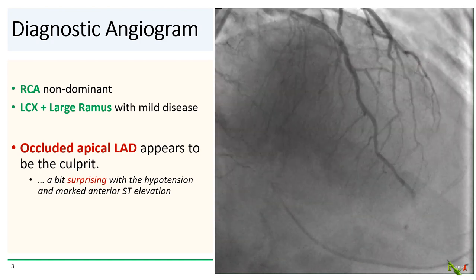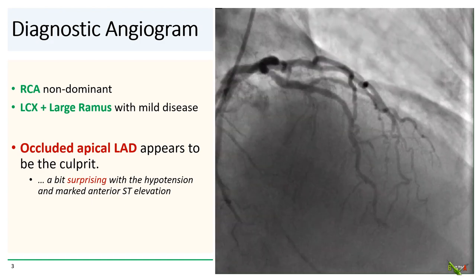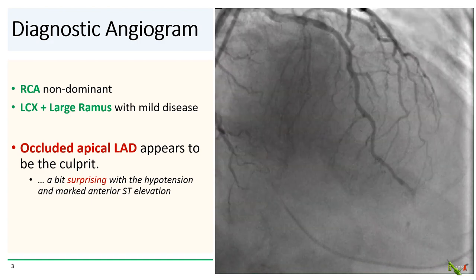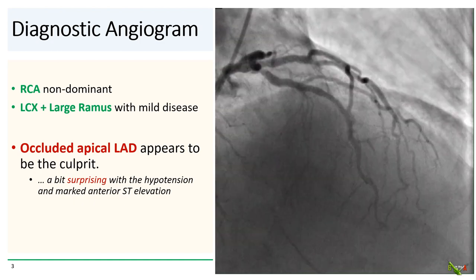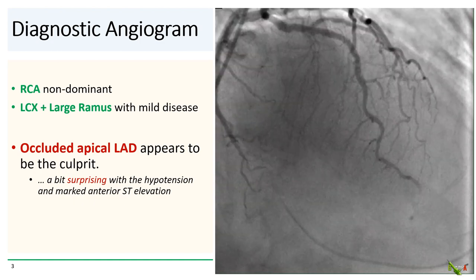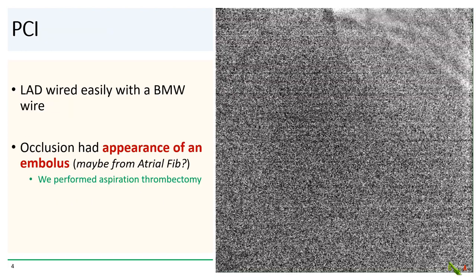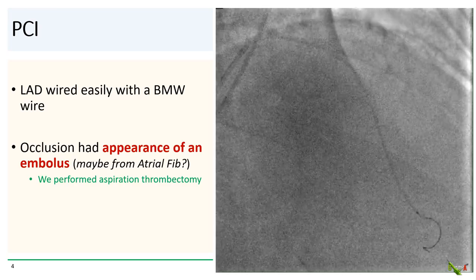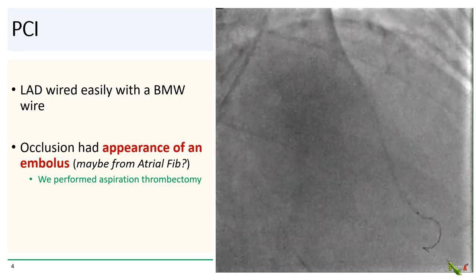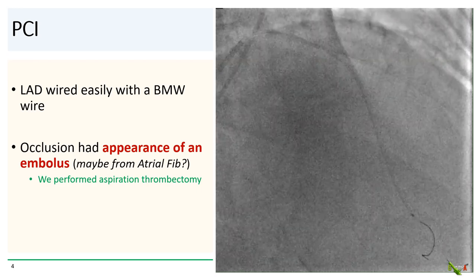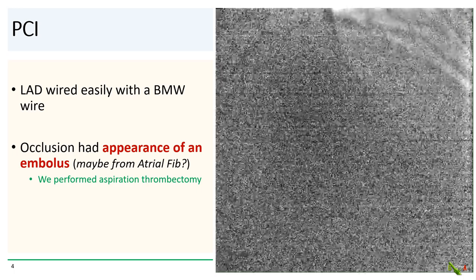On diagnostic angiogram, the RCA was non-dominant and the left circ and large ramus had only mild disease. The culprit seemed to be an occluded apical LAD. And frankly, this was a little surprising given the patient's presentation and marked anterior ST elevation.